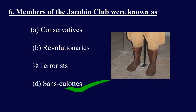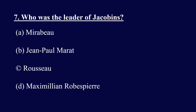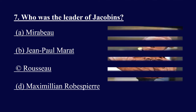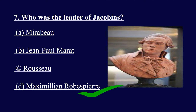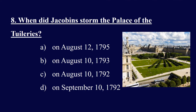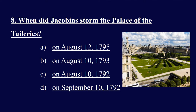Question seven: Who was the leader of the Jacobins? Options: A) Mirabeau, B) Jean-Paul Marat, C) Rousseau, D) Maximilian Robespierre. The right answer is D, Maximilian Robespierre — he was the leader of the Jacobins. Question eight: When did the Jacobins storm the palace of the Tuileries? Options: August 12, 1795; August 10, 1793; August 10, 1792; or September 10, 1792. The right answer is C, August 10, 1792.